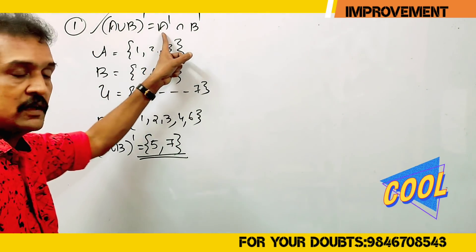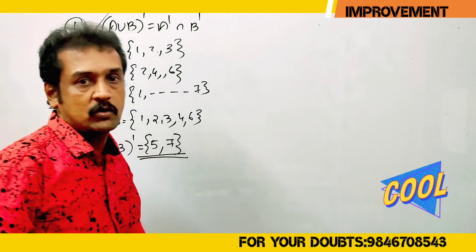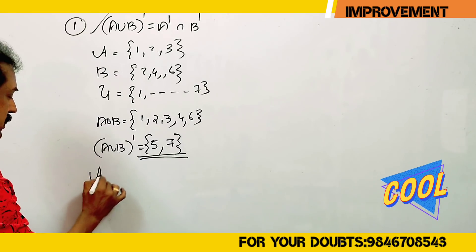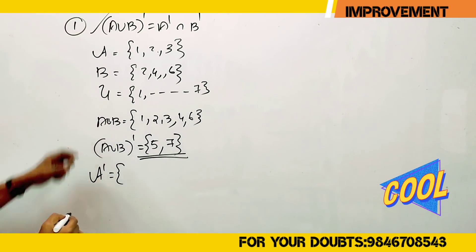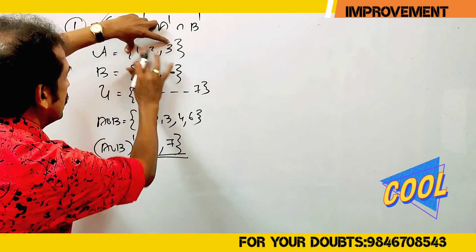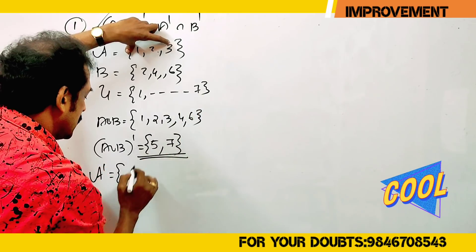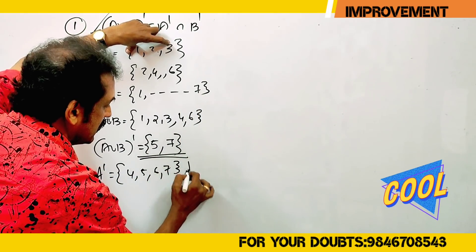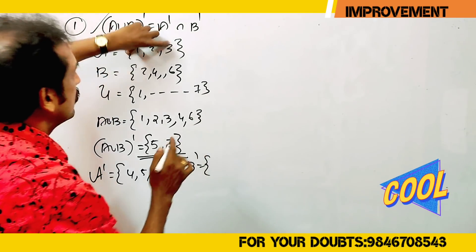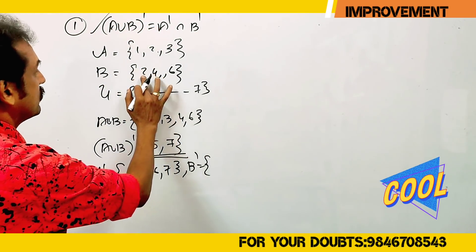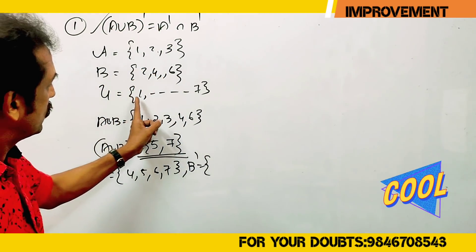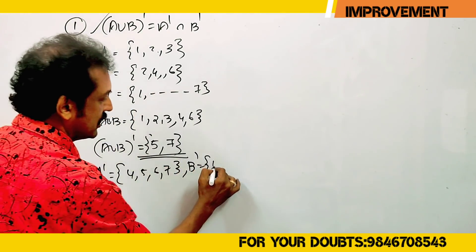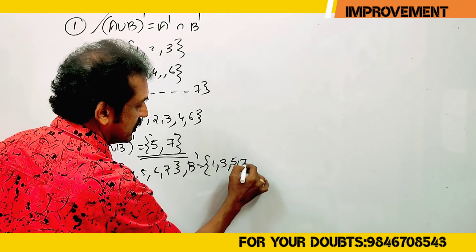Next, the right hand side: A complement intersection B complement. First step — A complement. A is {1, 2, 3}, so A complement is {5, 6, 7}. B is {2, 4, 6}, so B complement is {1, 5, 7}.